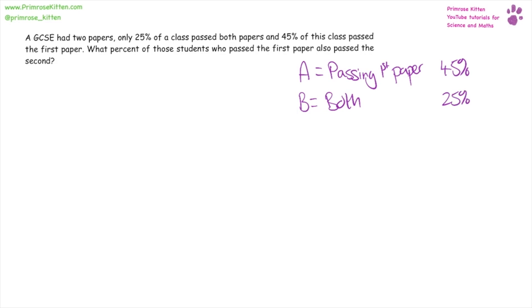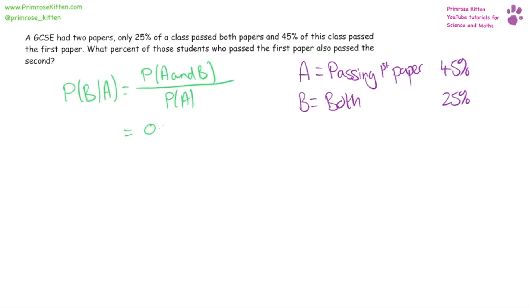We can do this with a formula — that's the first way I'm going to show you. The probability of B happening — passing both papers — given the probability of A — passing the first paper — is equal to the probability of A and B, so the probability of them passing both, over the probability of A, the probability of passing the first paper. So, the probability of them passing both is 0.25, the probability of them passing the first paper is 0.45, and this gives us 0.56, or 56%.